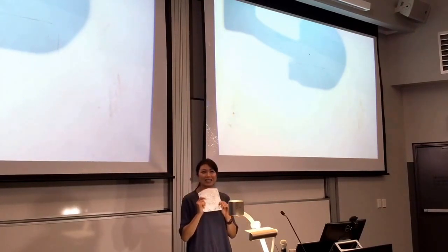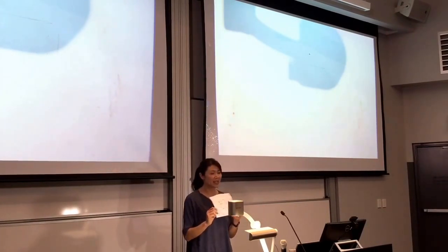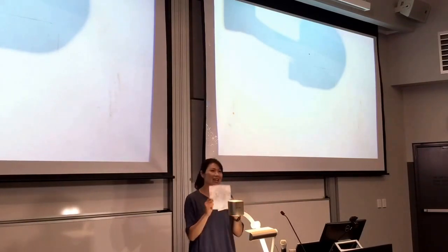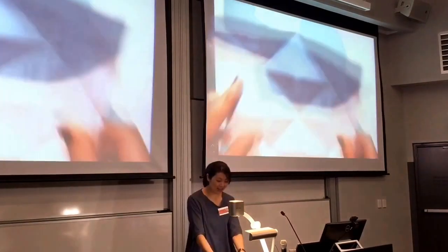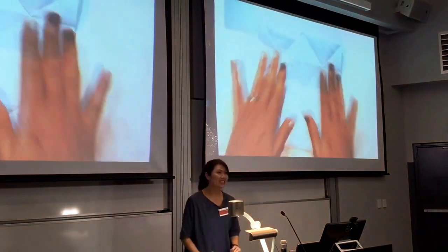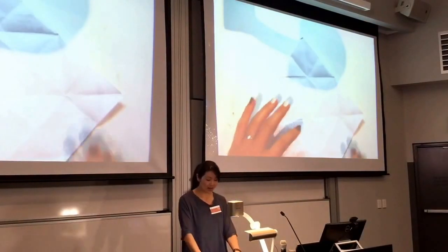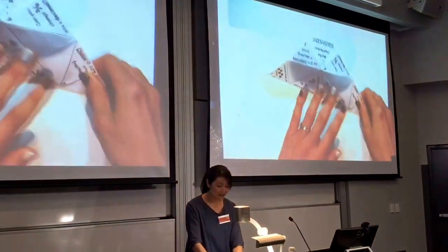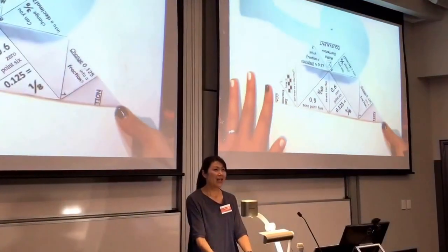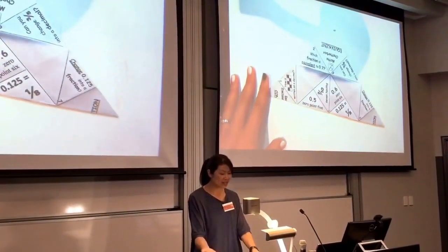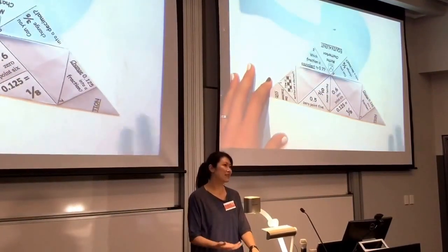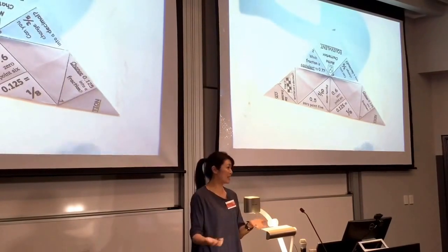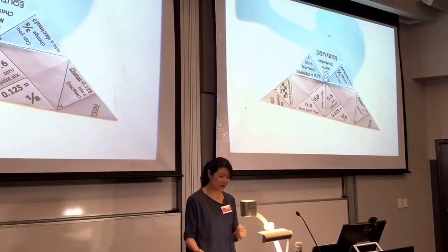So what you have is a diagram of a chatbox. Please follow me for the instructions. Place the paper down like this, and then make a triangle by folding corner to corner. You can ask questions like, this is half the size of the original paper — so what is half in percentage? What is half in decimal?